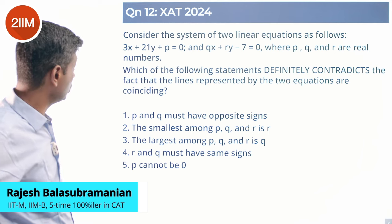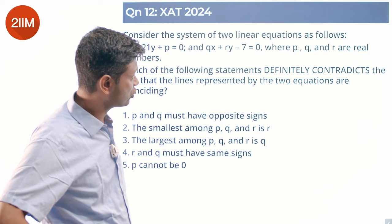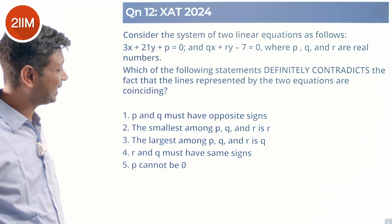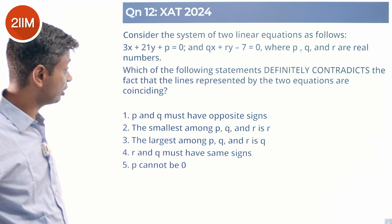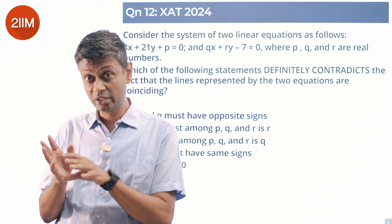Consider the system of two linear equations as follows: 3x plus 21y plus p equals 0, and qx plus ry minus 7 equals 0, where p, q, and r are real numbers. Which of the following statements definitely contradicts the fact that the lines represented by the two equations are coinciding?